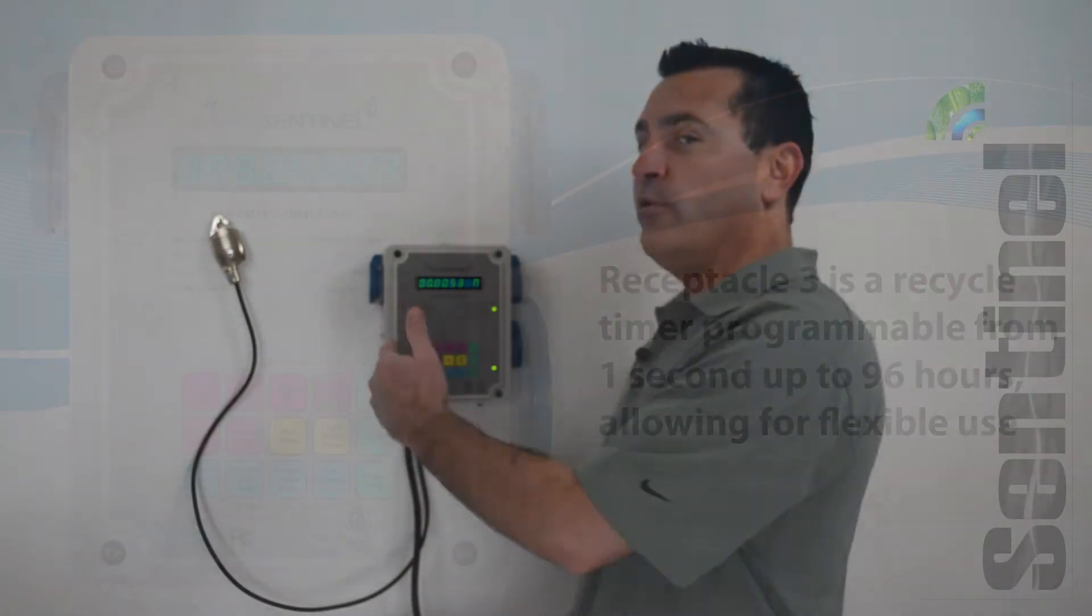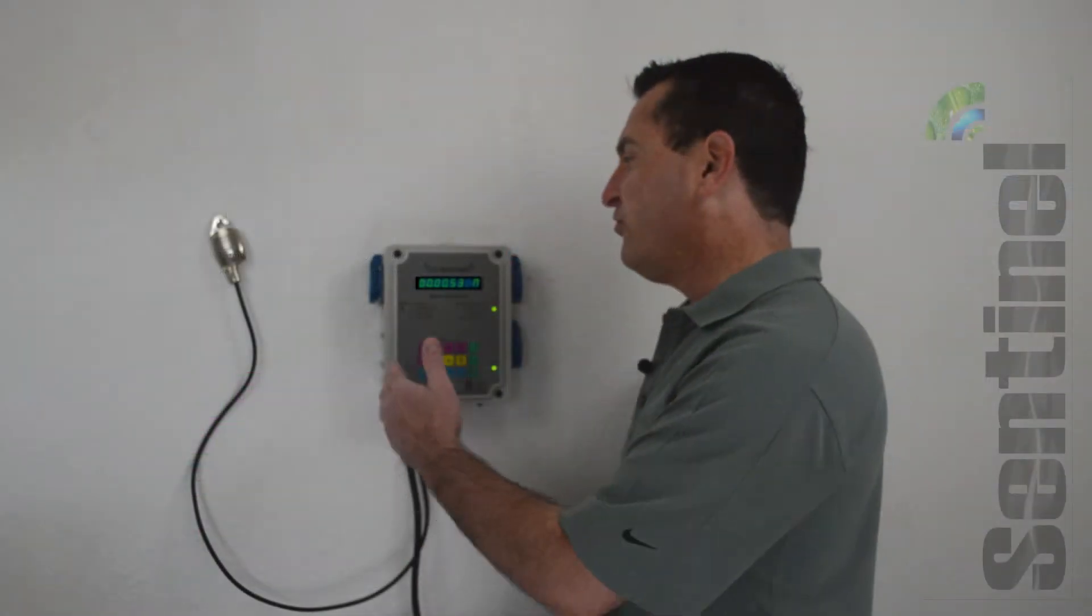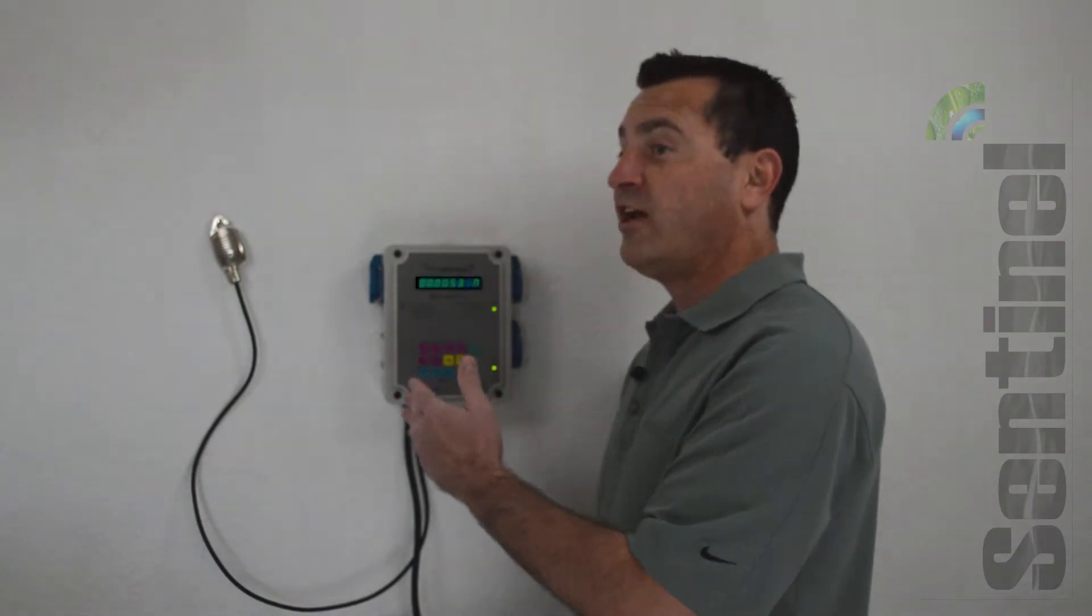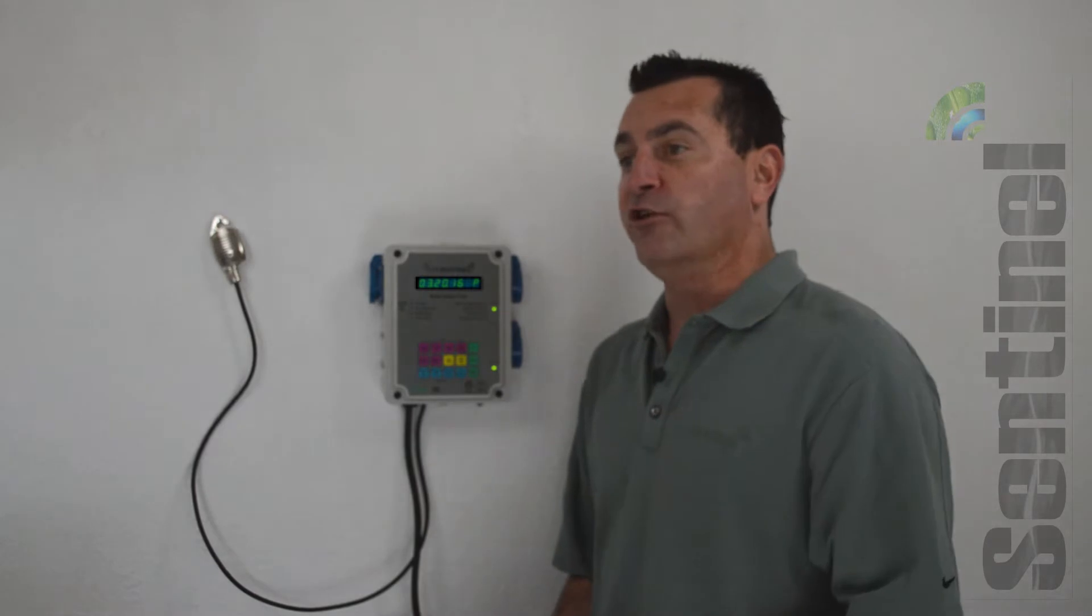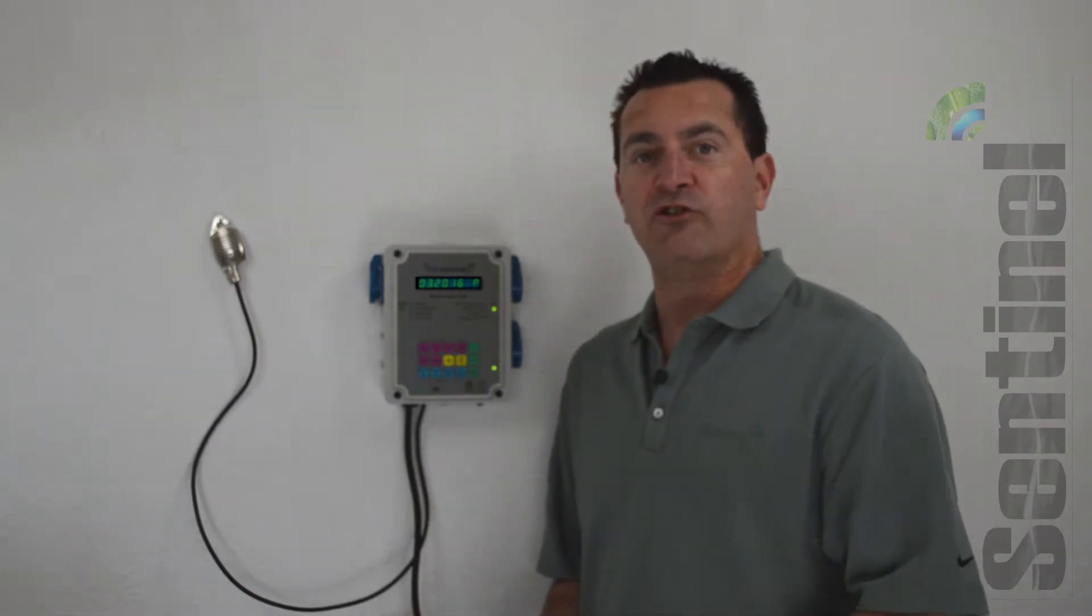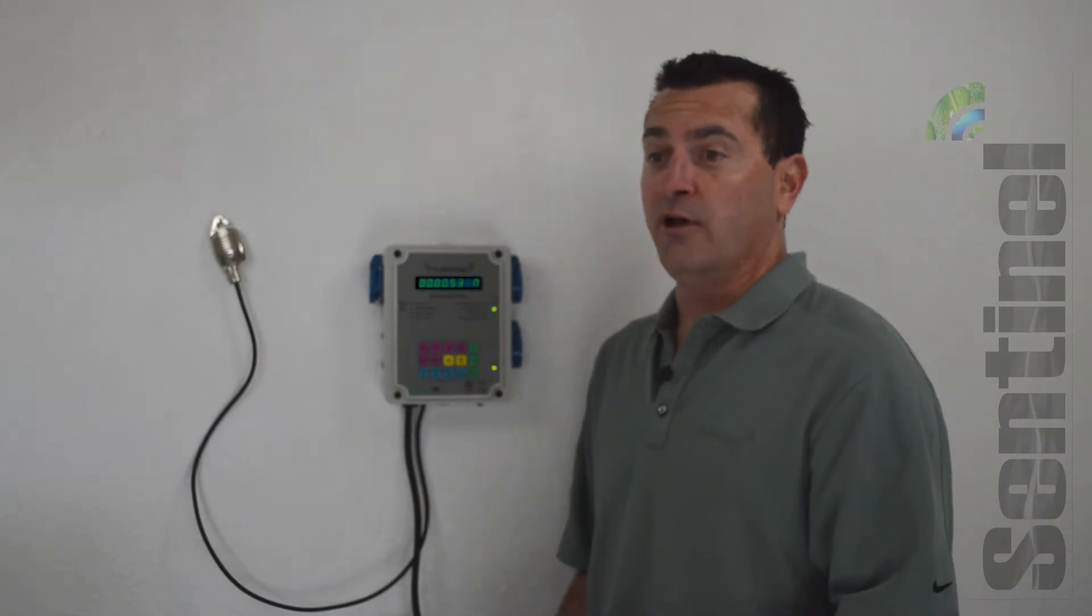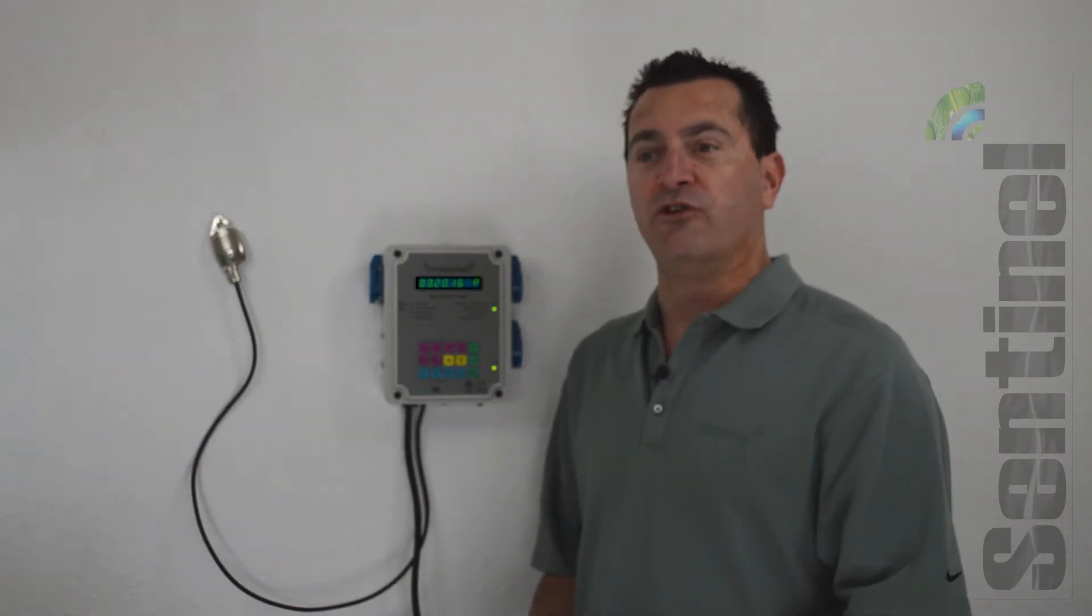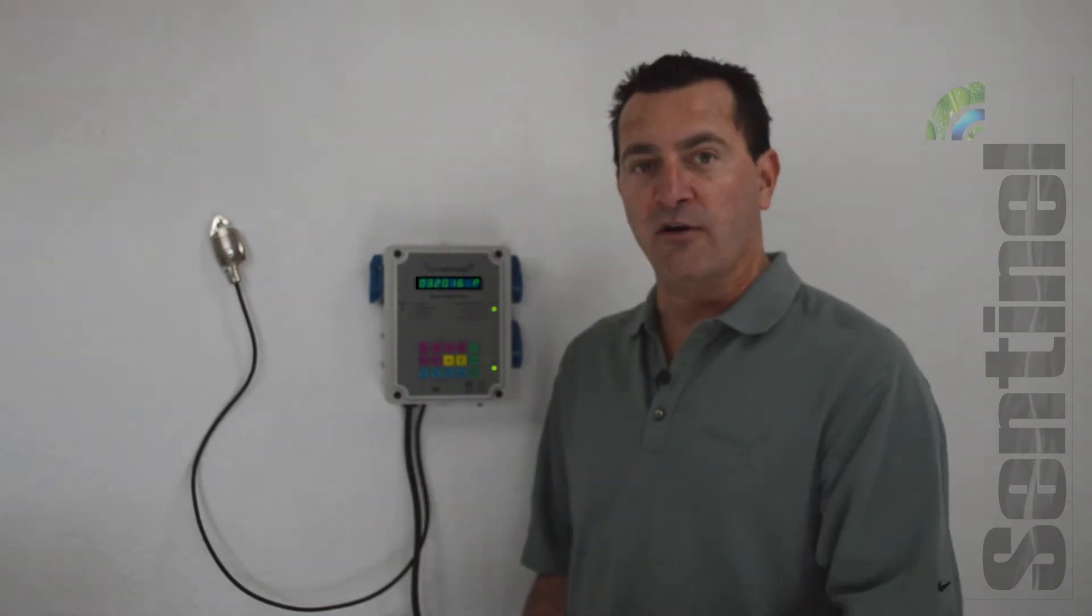On the other side here, we have our recycle device. The repeat cycle timer is a timer that's going to turn on for a given amount of time and off for a given amount of time and repeat that cycle over and over. This timer can be set from one second up to 96 hours. So if you have really big plants and you need to drip them once every two or three days to start with, it's possible to do that. It's also possible on an aeroponic system or a drip system to spray repeatedly, 10 seconds on, 10 minutes off, something like that.